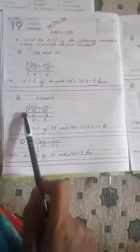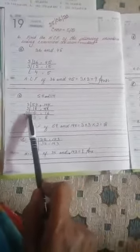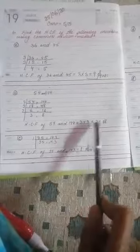Here, see, 54 and 114. It can divide by 3. Then 18 times and 48 times. And here, 3 also divided. Look here, it will be HCF of the two numbers. 3 multiply 3 equals 9, 9 multiply 2 equals 18.